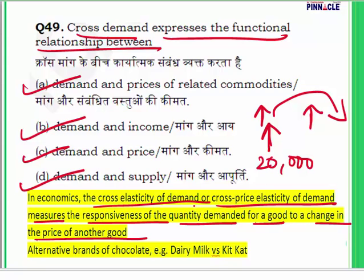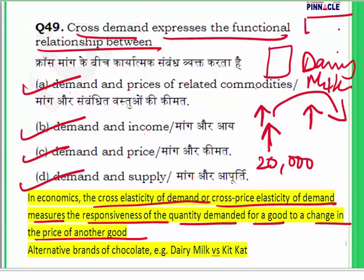People compare the prices of two commodities that can replace one another. For example, if the price of Dairy Milk chocolate increases, the sales of a substitute like KitKat may increase. Cross demand expresses the functional relationship between demand and prices of related commodities. The answer for question 49 is A — demand and prices of related commodities.